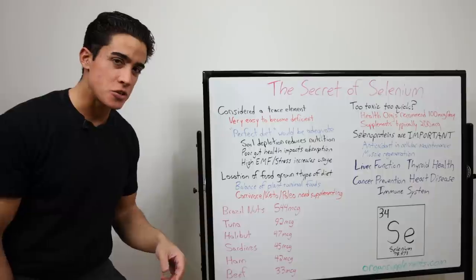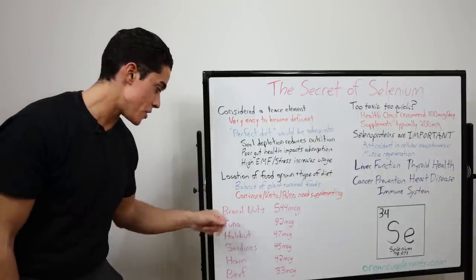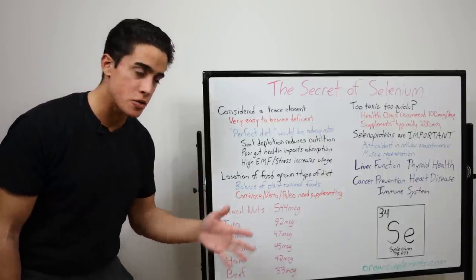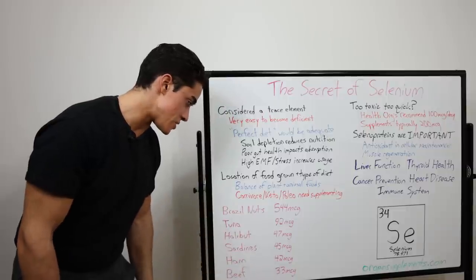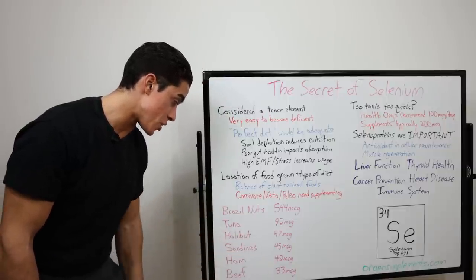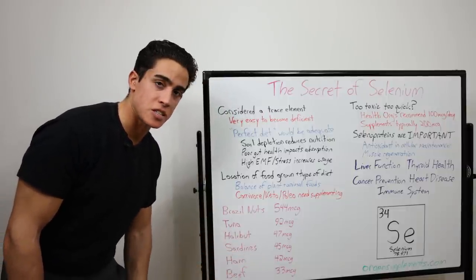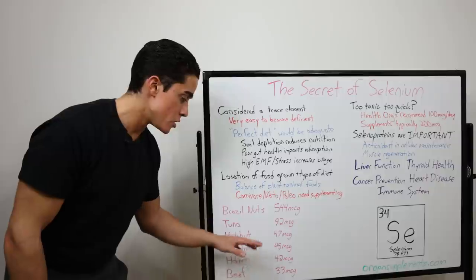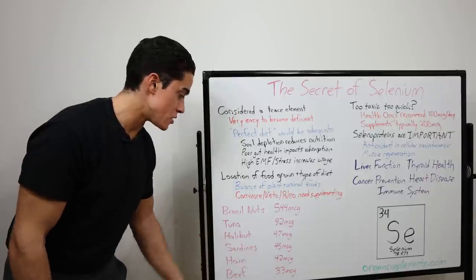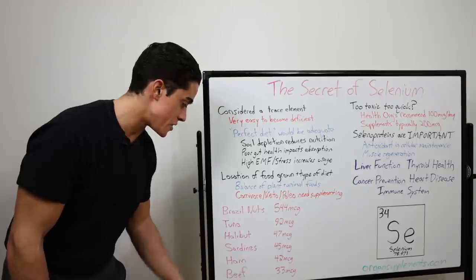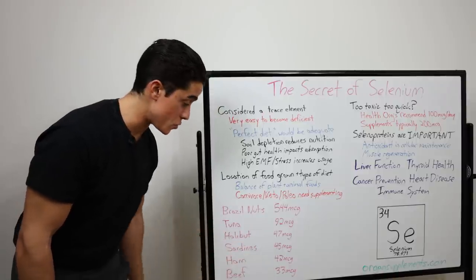Brazil nuts, anti-nutrient content, not that safe of a bet. Tuna, halibut, sardines, anything from the ocean, kind of polluted, has toxins in it. Pork, very hard to get high quality, and the nutrient content is similar to beef. So ideally, you eat plenty of beef, and you have an ideal amount of absorption. And this is for three ounces of each of the respective foods.